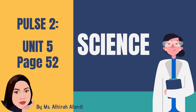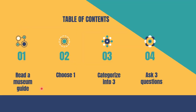Some of these things you already know in Malay — you've already learned them in your Science subject. Now the question is: how do we talk about these things in English? First, we will do some reading. We will read a museum guide and then finish three more exercises about this text.